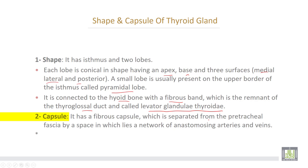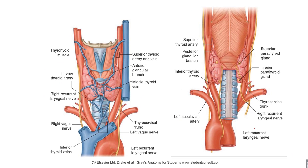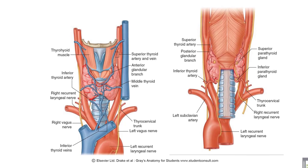The capsule of the gland is separated from the pre-tracheal fascia by a space in which lies a network of anastomosing arteries and veins. This is the thyroid gland — the isthmus and the two lobes, conical in shape with the apex upward. The base reaches about the sixth tracheal ring. These are the surfaces of the gland, including the anterolateral surface and the posterior surface related to the parathyroid glands.